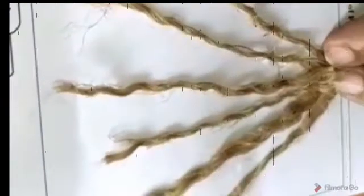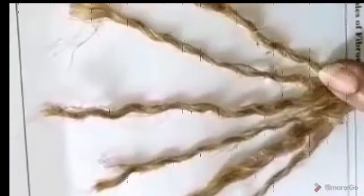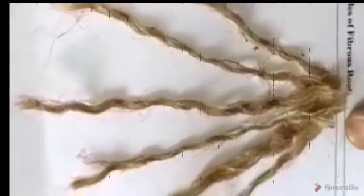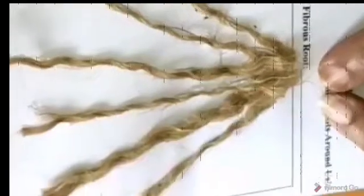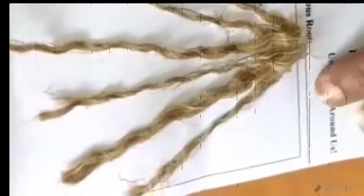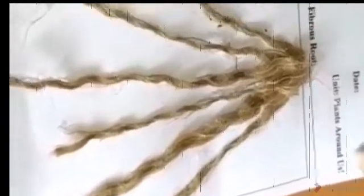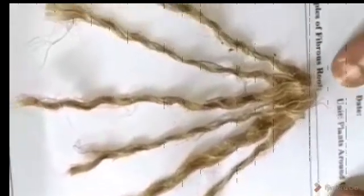Fibrous roots are bunch or bushy roots like this. It has no main root. You can write examples of fibrous roots here. Like onion, grass, wheat. Right children, so our tap root and fibrous roots activity is ready.